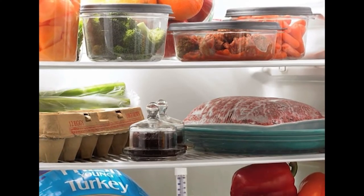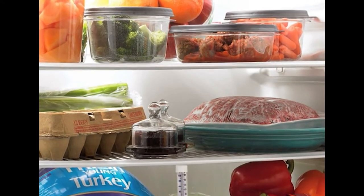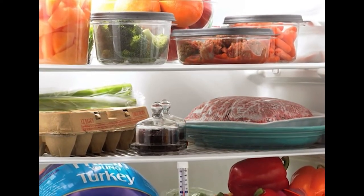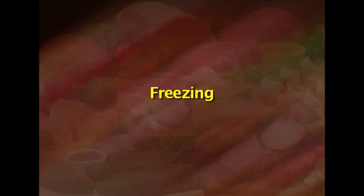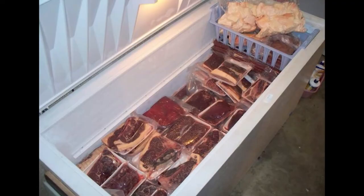Processed meat products are also stored under refrigeration until finally consumed. These products are less perishable compared to fresh meat, and their refrigerated shelf life depends on the processing steps followed. The second type of preservation is freezing, which is the method of choice for long-term preservation. Freezing stops microbial growth and retards the action of enzymes, and has the advantage of retaining most of the nutritive value of meat during storage.